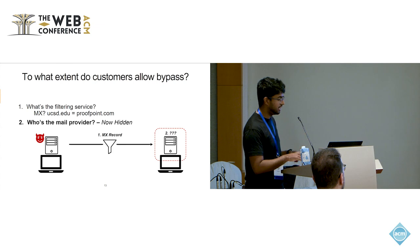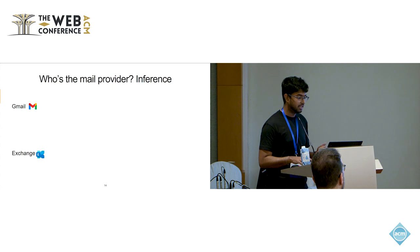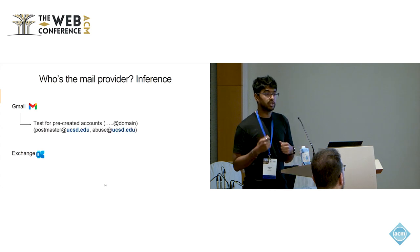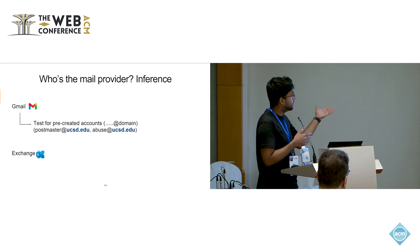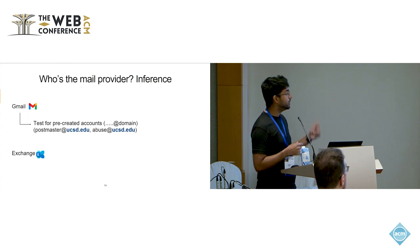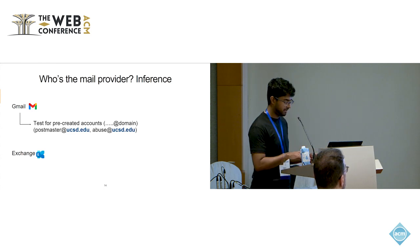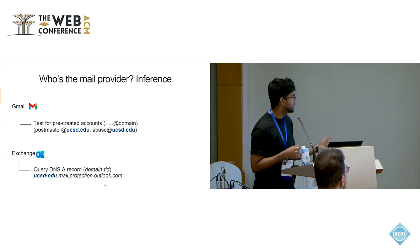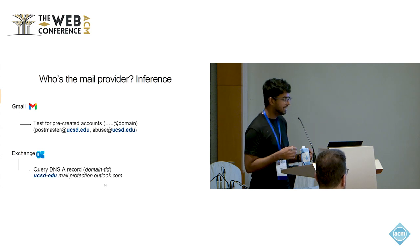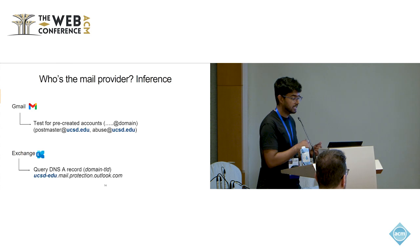The solution we came up with was to use a bunch of inference techniques. For instance, Gmail — when you create an account in Google Workspace or Gmail, Google goes and creates two default accounts for you: Postmaster at that domain and Abuse at that domain. We check for the presence of those two emails, and if they exist, then we know that the domain uses Google as its mail provider. Similarly, for Exchange, we query a particular DNS A record of the form UCSD.edu followed by that, and we're able to tell whether the domain is currently using Exchange as its email provider.